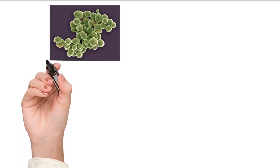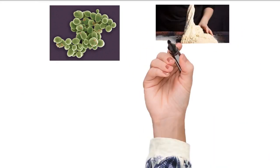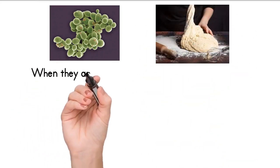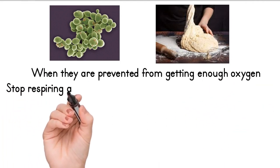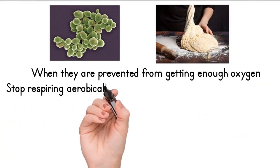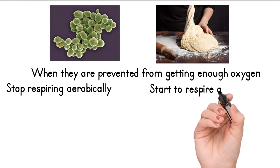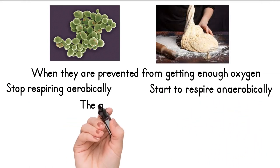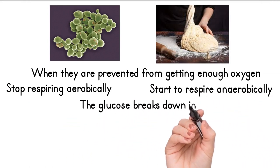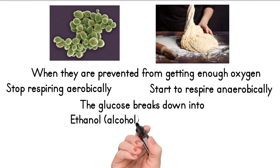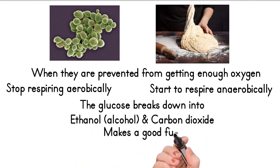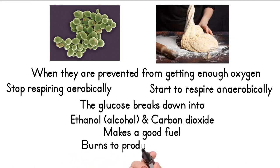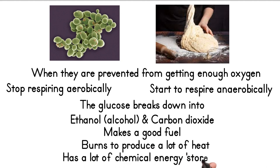Yeast are single-celled fungi. They are used in processes such as baking bread. When yeast cells are prevented from getting enough oxygen, they stop respiring aerobically and start to respire anaerobically instead. The glucose is partly broken down into ethanol and carbon dioxide. Ethanol makes a good fuel and will burn to produce a lot of heat, so it still has a lot of chemical energy stored in it.